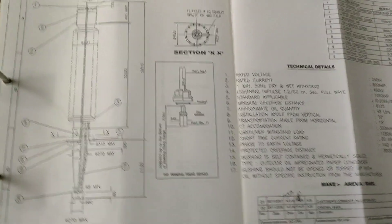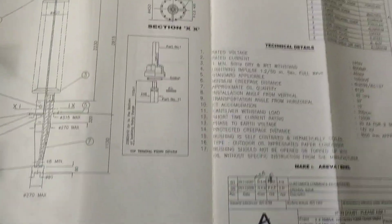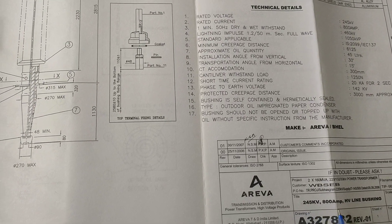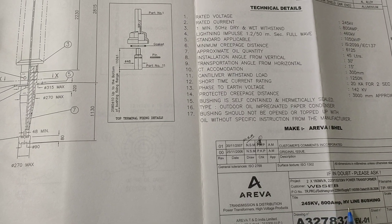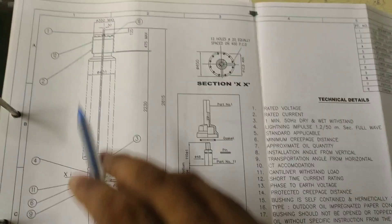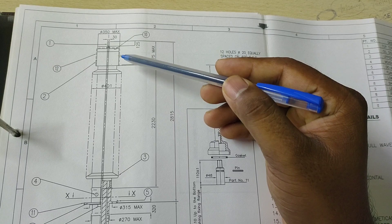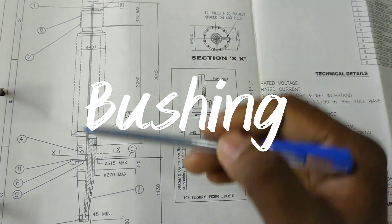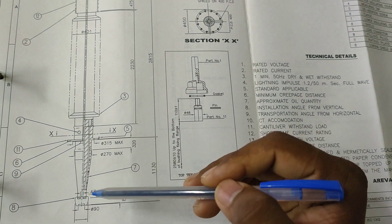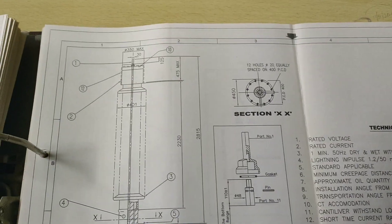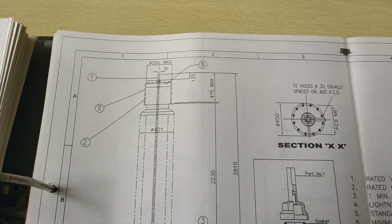This is the HV bushing. The rating of the HV bushing is 245 kV and 800 ampere HV line bushing. Different parts are here of the bushing. Number one is called the top terminal connector. Number two is called the oil side glass.